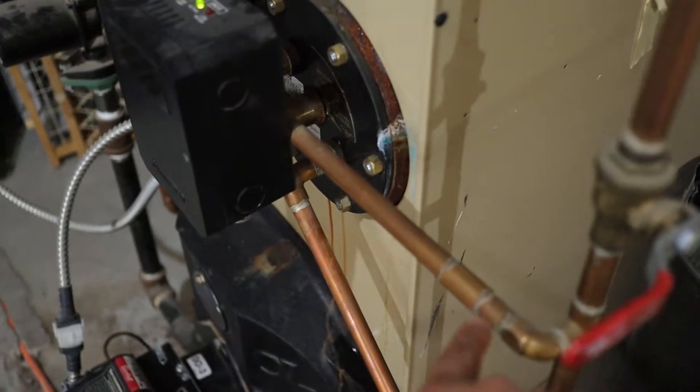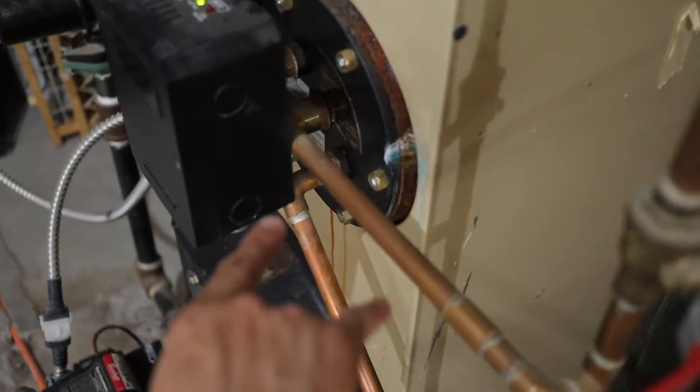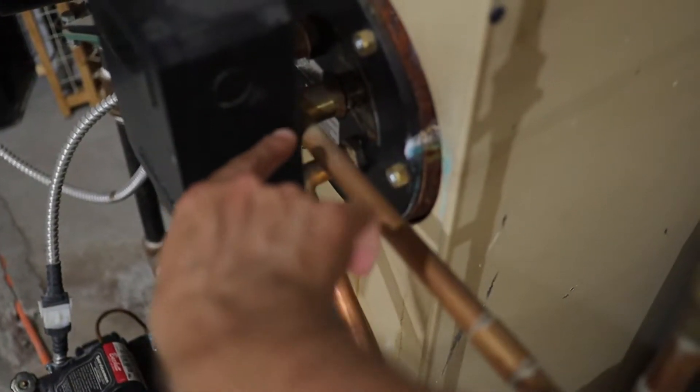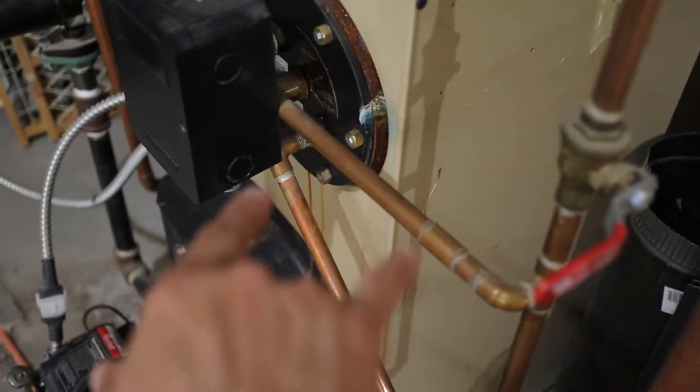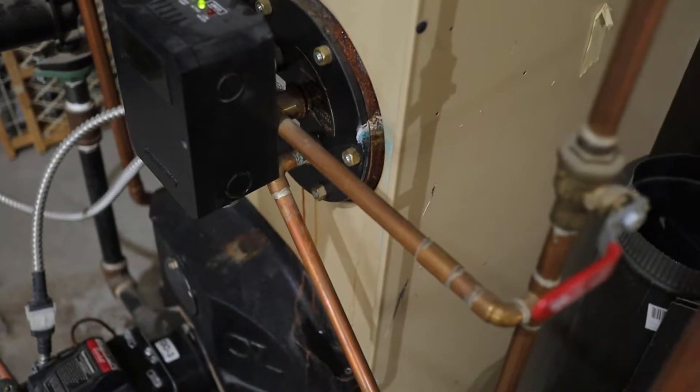Now the right way to fix this would be to replace this whole section of pipe or maybe cut that bad section out where it's corroded and splice in a new piece. But that's kind of a big job, especially for me. I'm not a plumber.